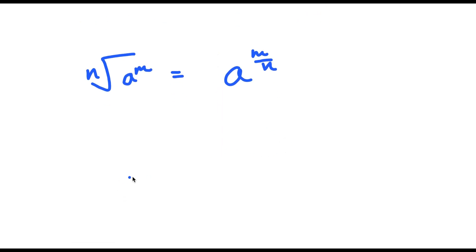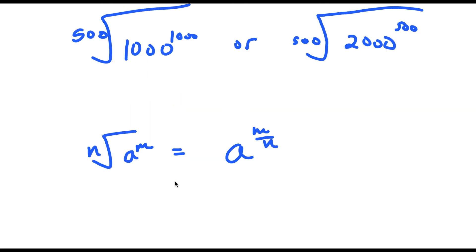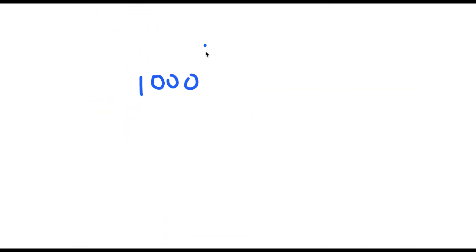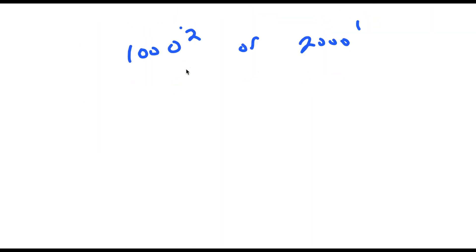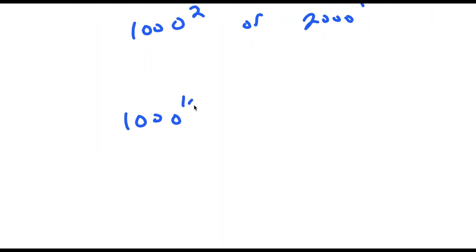So this is the same thing as 1,000 to the power of 1,000 over 500, and I'm comparing this to 2,000 to the power of 500 over 500. Now 1,000 divided by 500 is equal to 2, so I get 1,000 to the power of 2. And instead of taking the 500th root, I can also take the power of 1 over 500, which is the same thing.